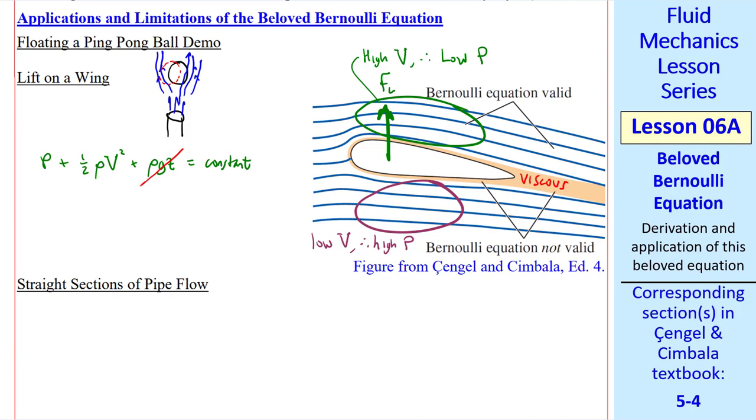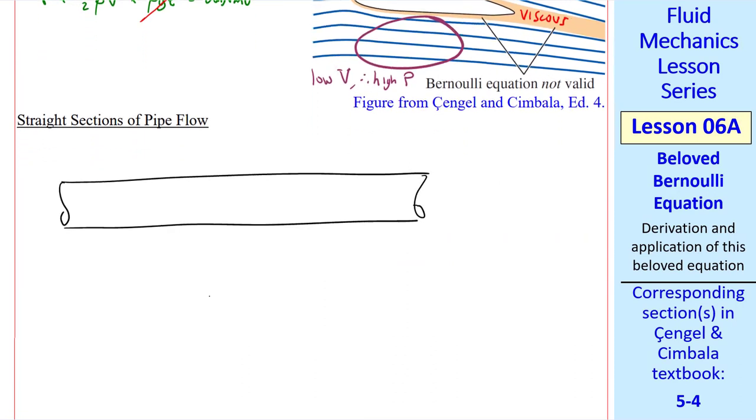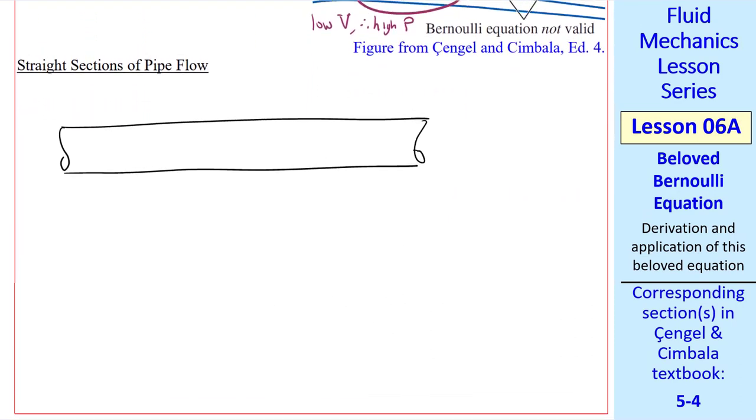The beloved Bernoulli Equation is quite valuable when analyzing airplane wings. Now consider long straight sections of pipe flow. Suppose we have a section of pipe that's fully developed and laminar. I sketched the velocity profiles. Consider a streamline from some location 1 to some downstream location 2 along a streamline right in the middle of the pipe.